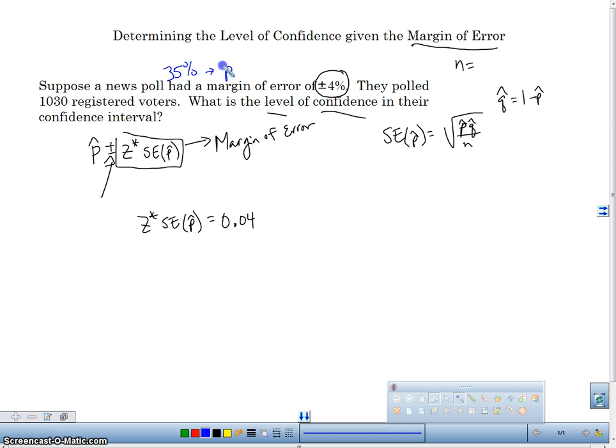So we do have to know p hat too. And usually we do when we see that on those polls, obviously, we're going to know what that is. So we know what p hat is. p hat is going to be 0.35 in this case in my example.